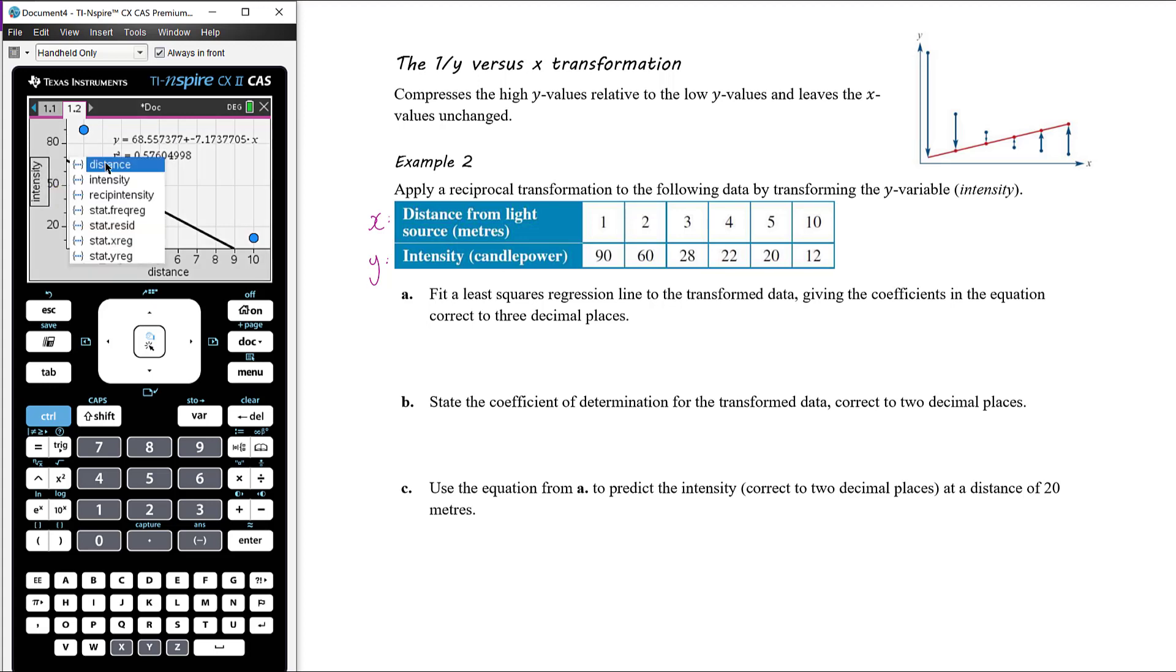We now want to change the intensity, so the y variable. Instead of being intensity, it's going to be reciprocal of the intensity or one over intensity. We get a much better fit. We've gone to something now with a coefficient of determination of 0.96. So significant improvement.